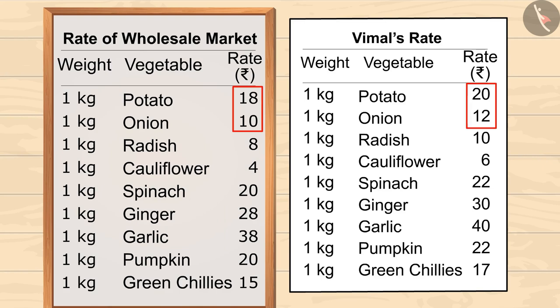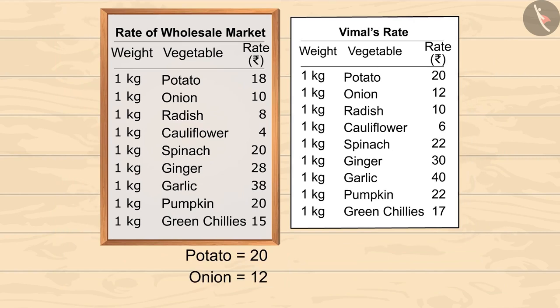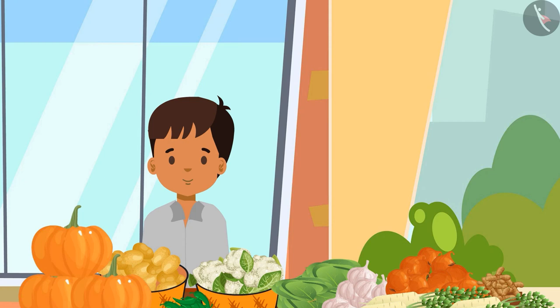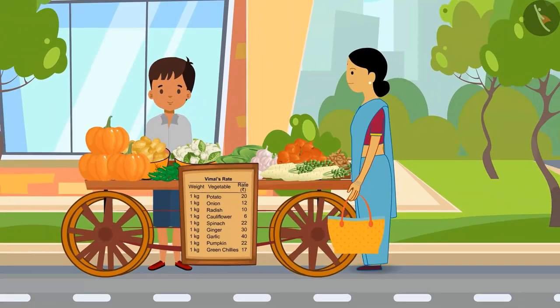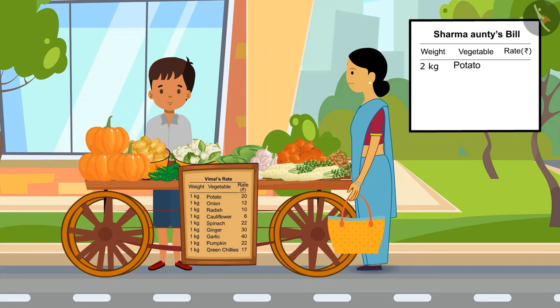For example, look at the prices of potato and onion. Yes, Vimal has increased the prices of all the vegetables by 2 rupees. This extra money is Vimal's daily earnings. Now let's see — Sharma auntie is buying some vegetables from him.